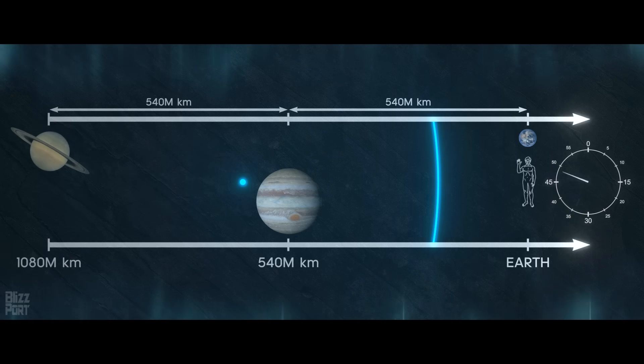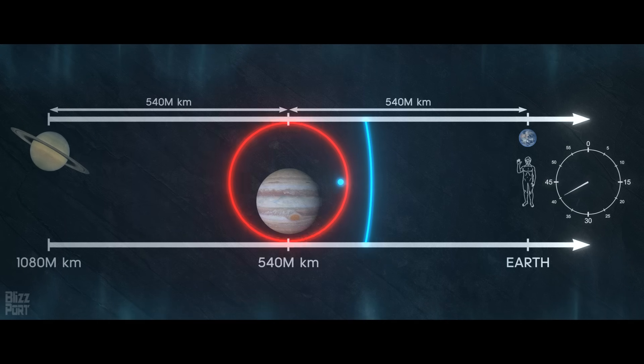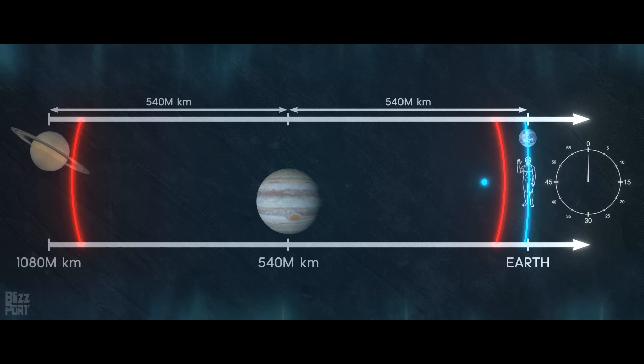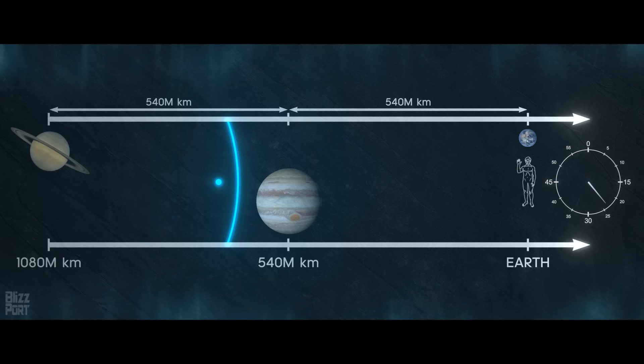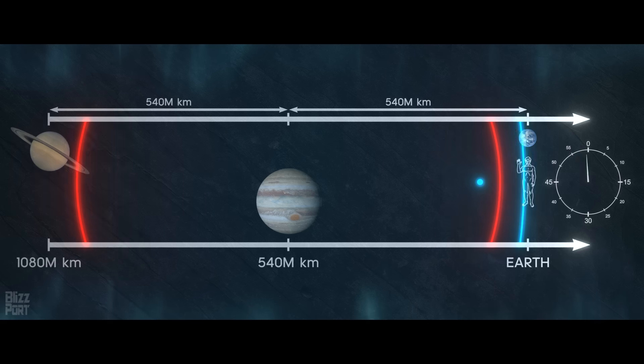Effectively, from our perspective, the sphere traversed this distance twice as fast. Now, if the sphere is traveling at 90% of the speed of light, the initial light wave emitted from Saturn will reach us at the usual time. However, the light wave emitted from Jupiter 33.3 minutes later will arrive just 3.3 minutes after the first wave. As a result, from our perspective, the sphere has covered a distance of 540 million kilometers in only 3.3 minutes, far exceeding the speed of light.